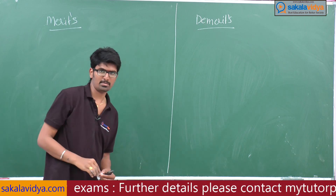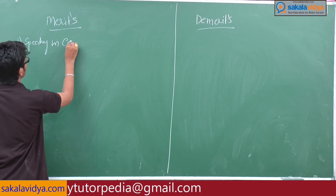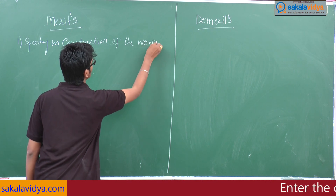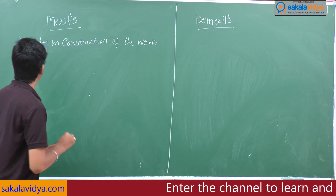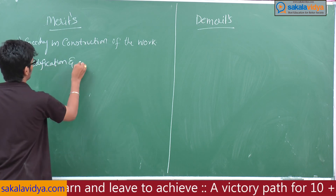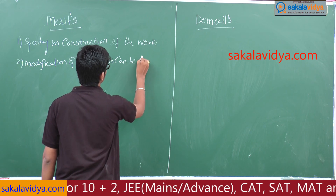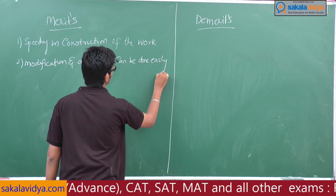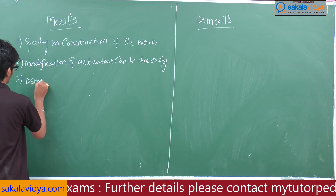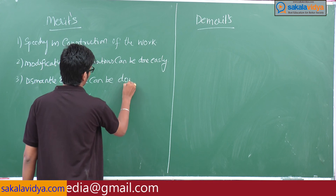Under merits, the first point is speed in construction of work. The second point is modifications and alterations can be done very easily. The third point is dismantle and reuse of steel can be done.